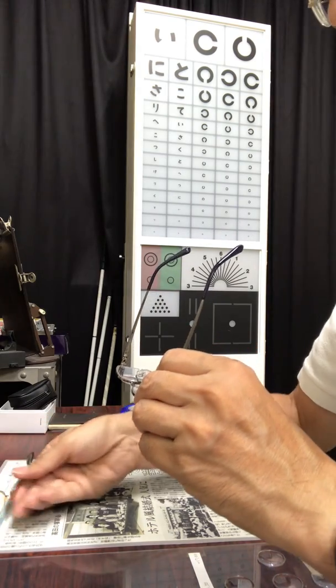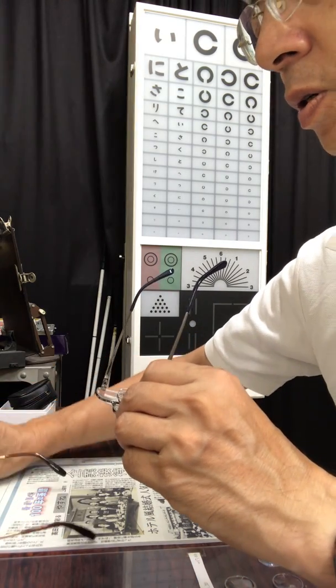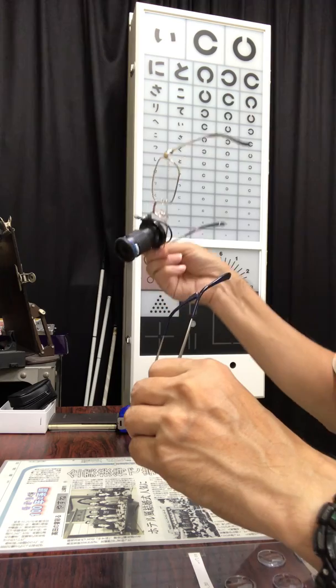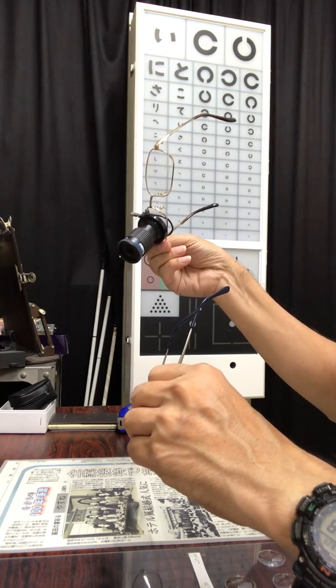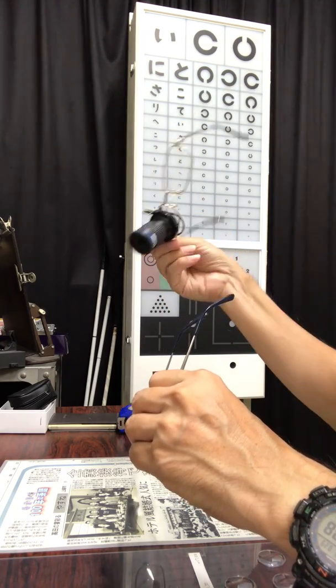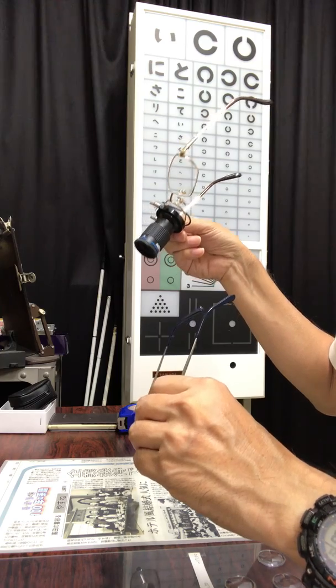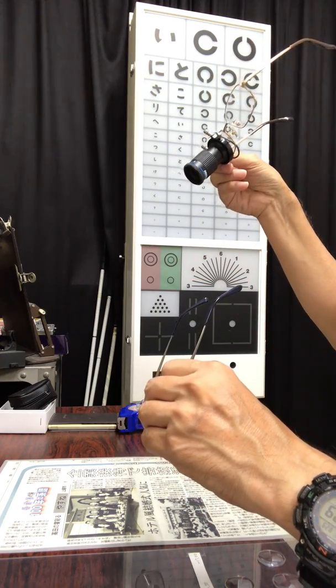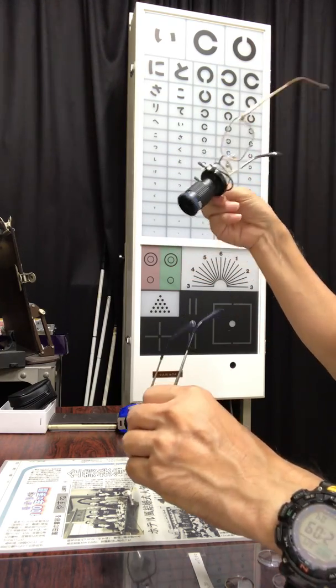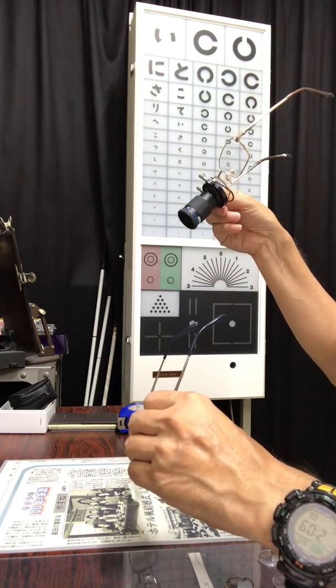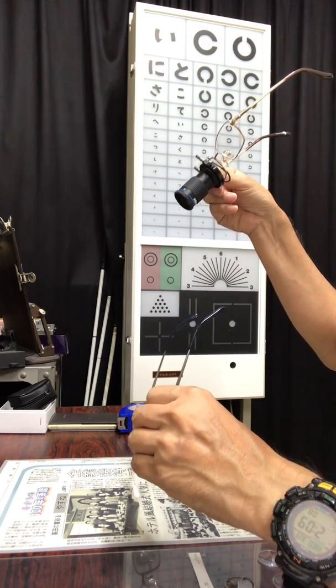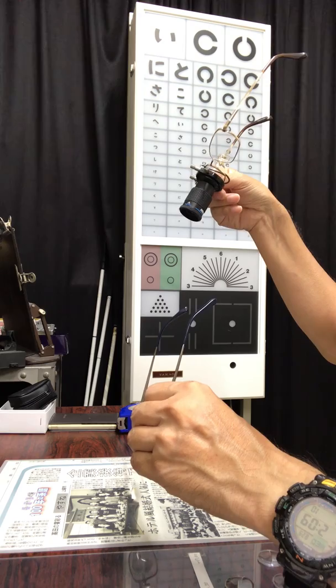And the other working distance of telemicroscope EVP meter is about 30 centimeters. You can see the difference of working distance.